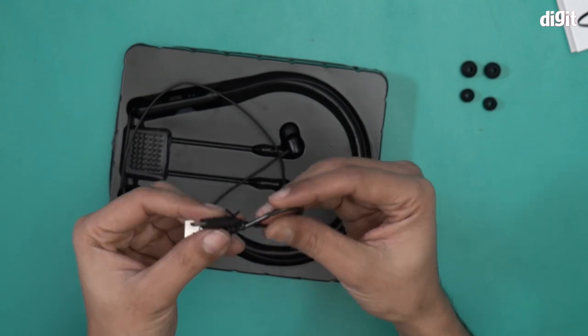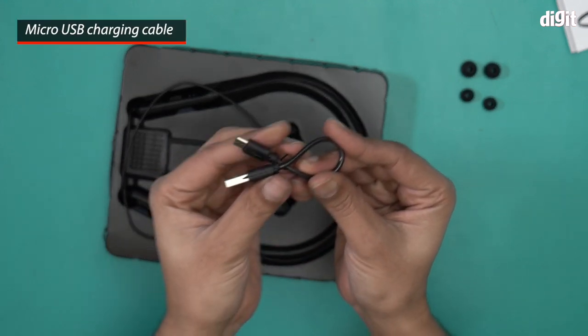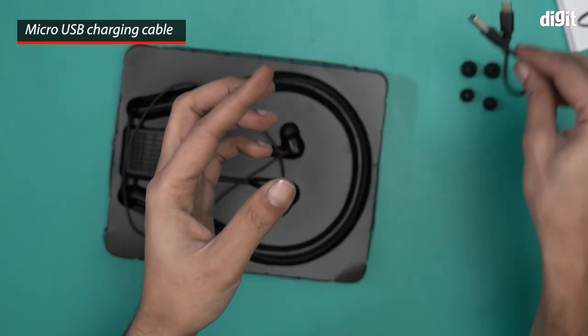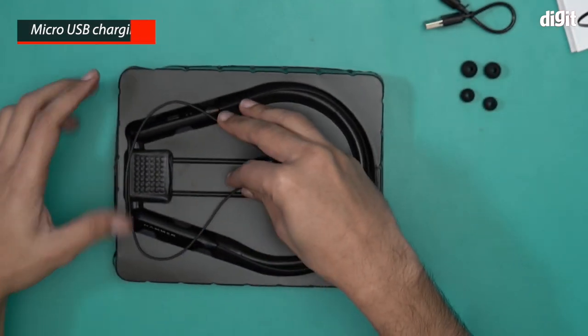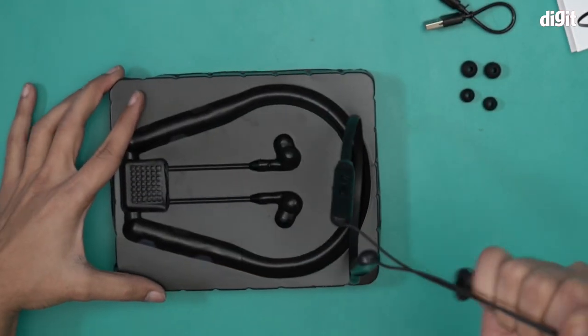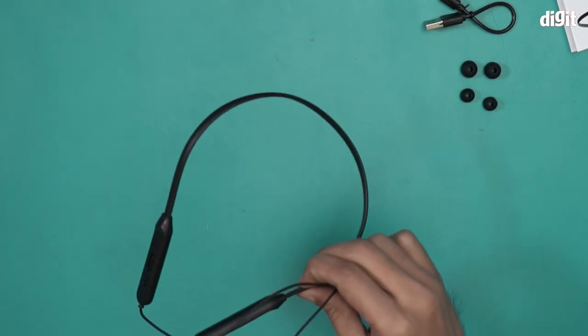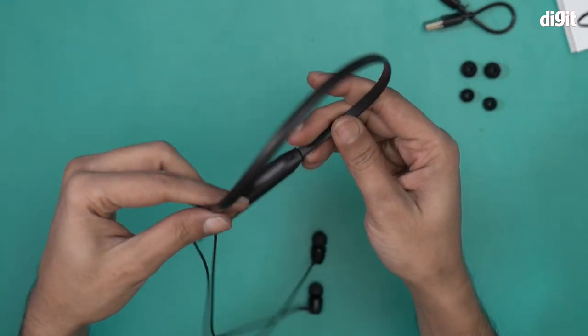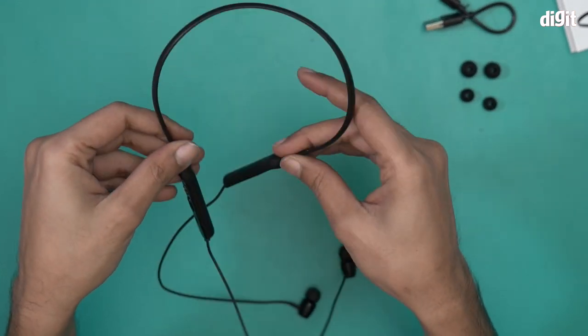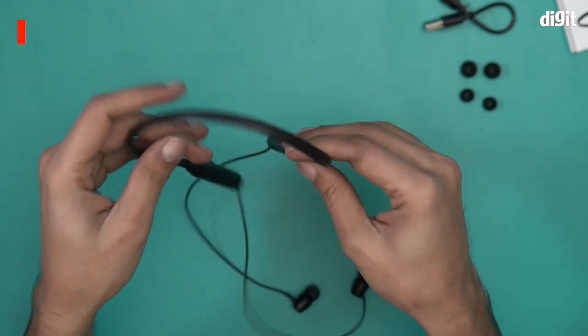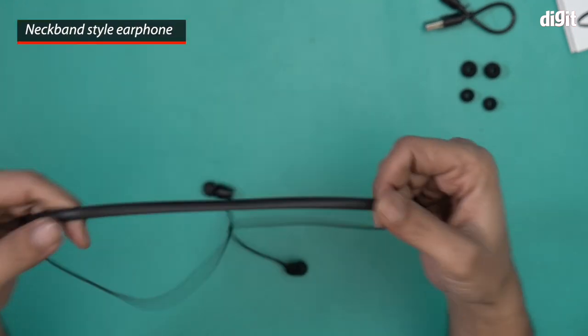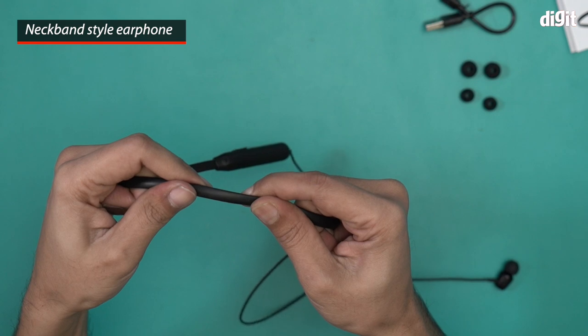We also have a micro USB charging cable, there you go. And this is the neckband in question, the Hammer Sting Light neckband. As I mentioned earlier, this is a neckband-style headset. This is a flat TPE neckband; it's super flexible as well.